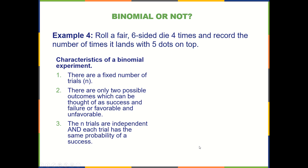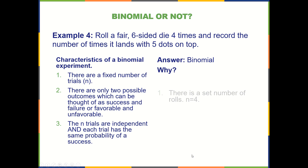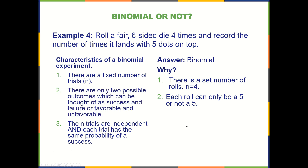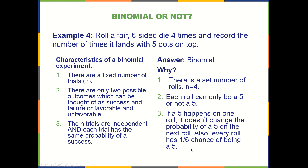Roll a fair six-sided die four times and record the number of times it lands with five dots on top. Is this binomial? Yes, it is, because there's a fixed number n. Each roll can either be a five or not a five — a success would be rolling a five, and not rolling a five would be a failure. If a five happens on one roll, it doesn't change the probability of a five on the next roll. Also, every single roll, we have a one-in-six chance of getting a five.